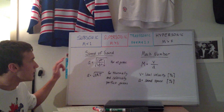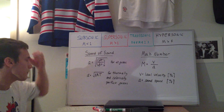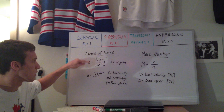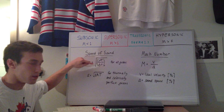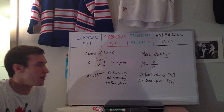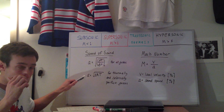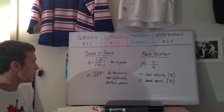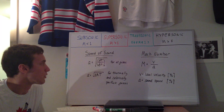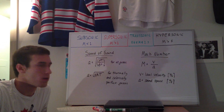First we'll look at the speed of sound. The definition for all gases in general is that the speed of sound equals the square root of the change of pressure with a change in density isentropically. If we make the assumption that it's a calorically perfect gas, we can bring it down to the more well-known definition: the square root of the ratio of specific heats, the specific gas constant, and the temperature. The Mach number is defined as the local velocity over the local speed of sound.